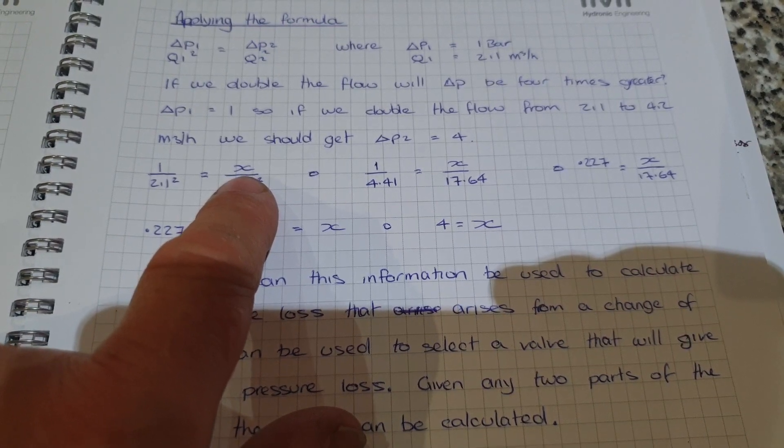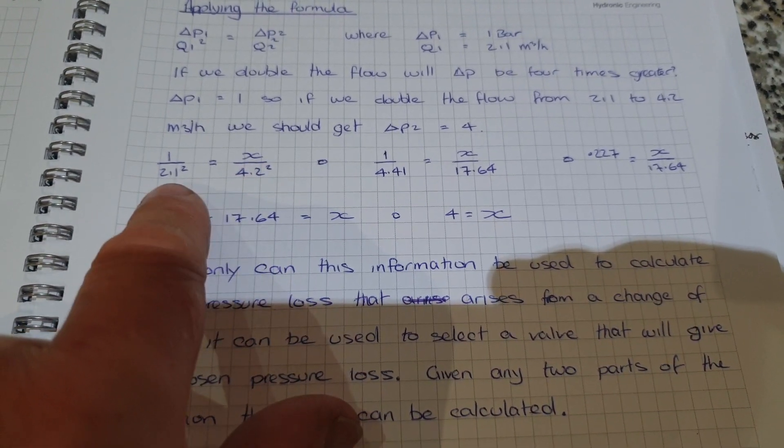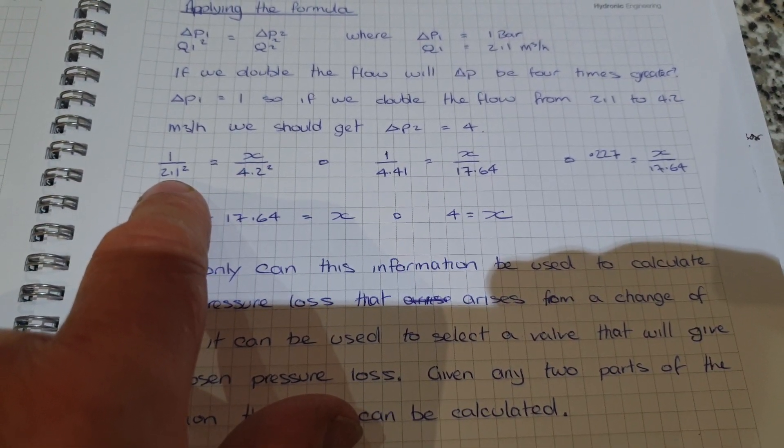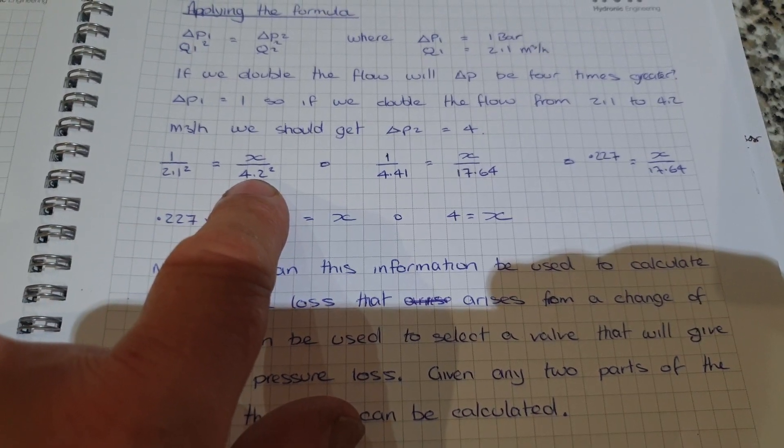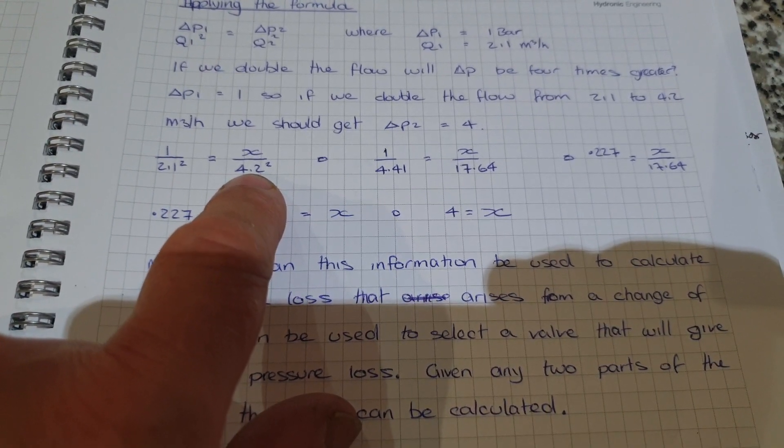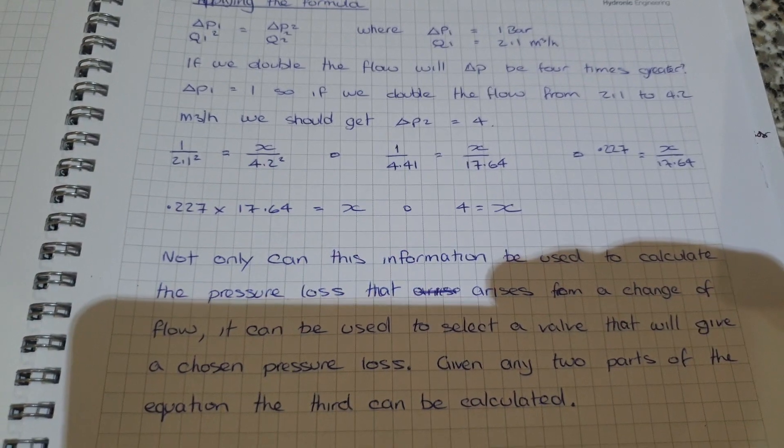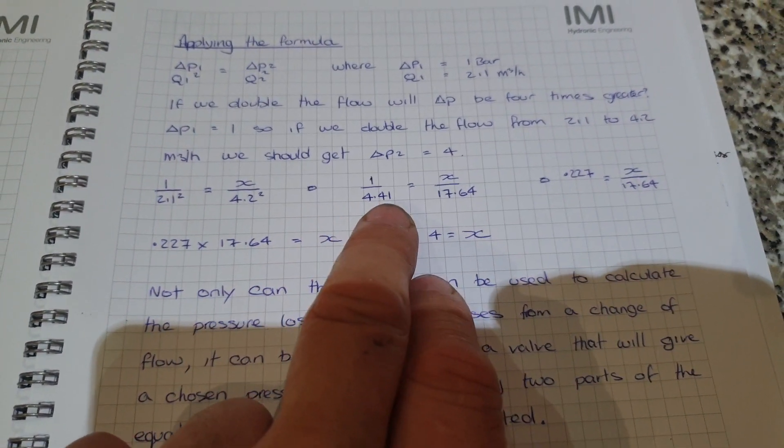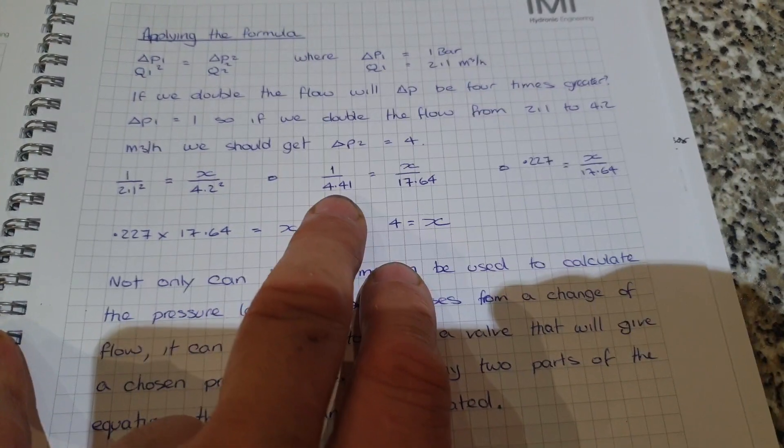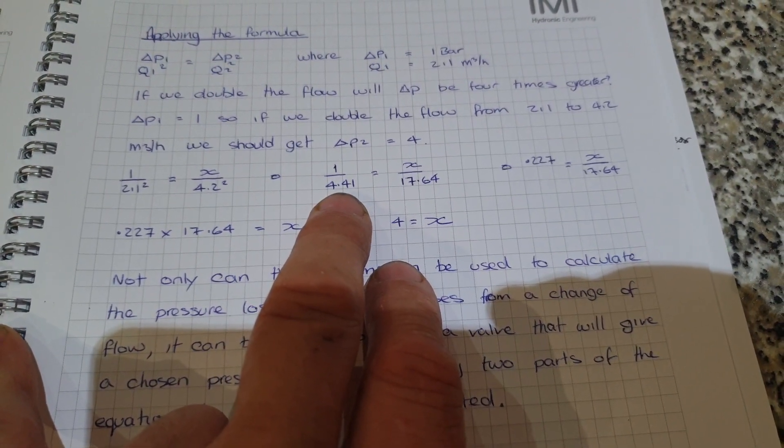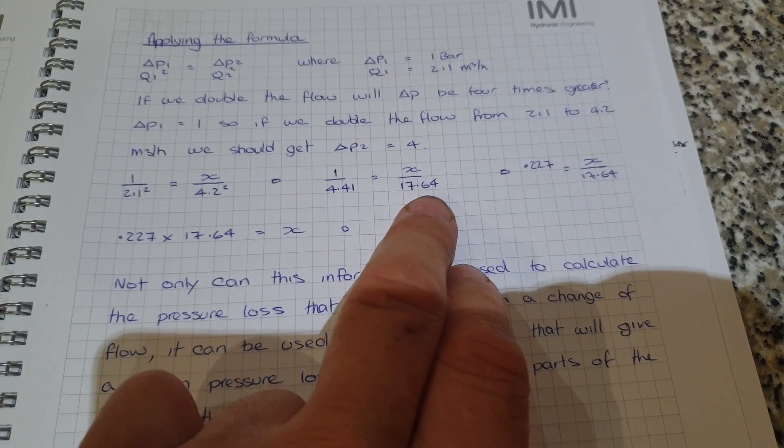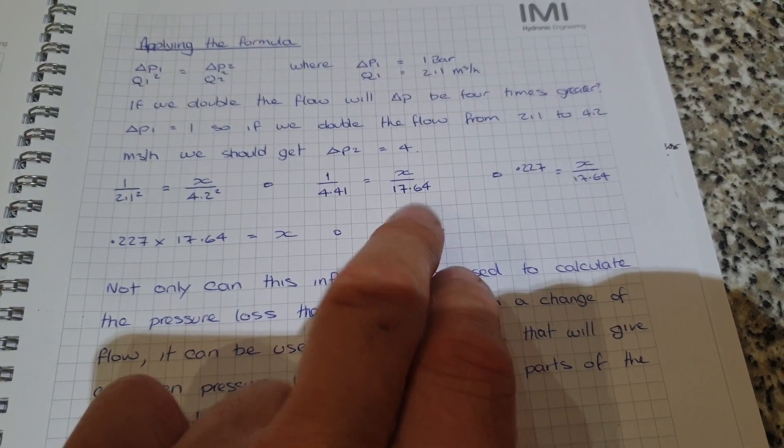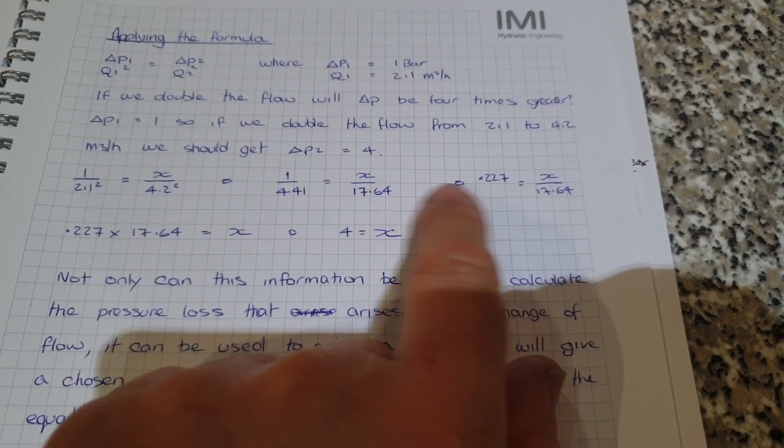We're trying to work out what our pressure drop will be if we double the flow. We've got 2.1 cubic meters per hour, we've doubled the flow to 4.2 cubic meters per hour, and we don't know what the resulting delta P will be. We'll break it down: we'll do the square of 2.1, which is 4.41, and we'll do the square of 4.2, which is 17.64.